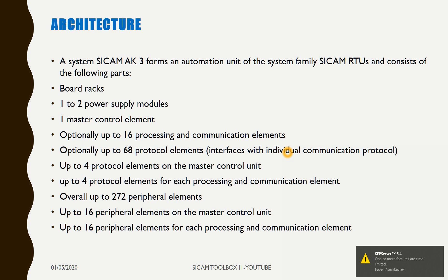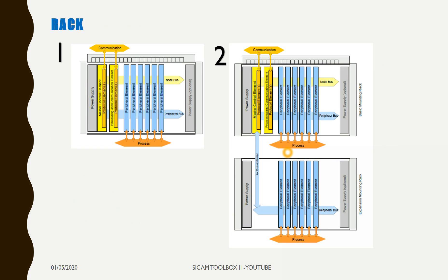We all need to know about the requirements of a project before designing the automation unit. Here you can see the rack overview. Case 1: power supplies within rack, master control elements, protocol elements, peripheral elements within rack. Case 2: power supplies within rack, master control elements, protocol elements, peripheral elements within rack.